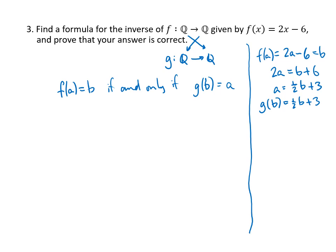g(b) is going to be (1/2)b + 3. Because remember, we want that to be a, so that's going to be our formula. So g(x) will be (1/2)x + 3.